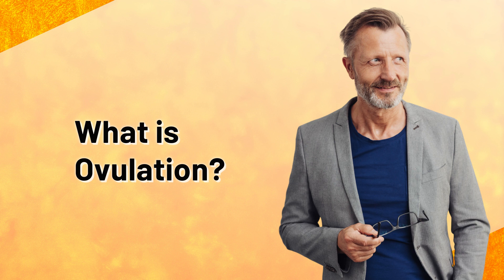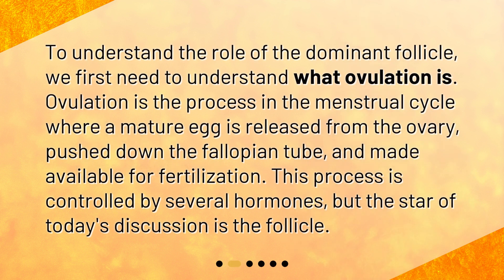What is ovulation? To understand the role of the dominant follicle, we first need to understand what ovulation is. Ovulation is the process in the menstrual cycle where a mature egg is released from the ovary, pushed down the fallopian tube, and made available for fertilization. This process is controlled by several hormones, but the star of today's discussion is the follicle.